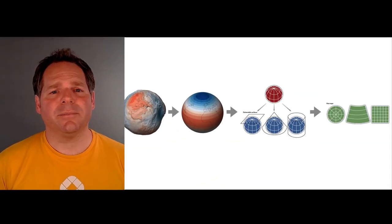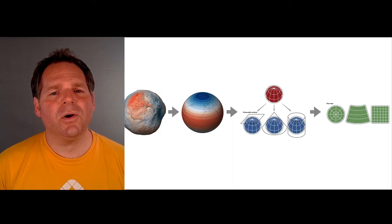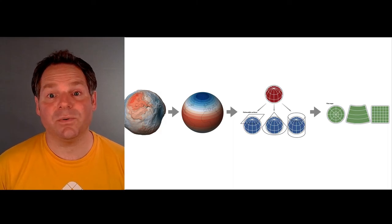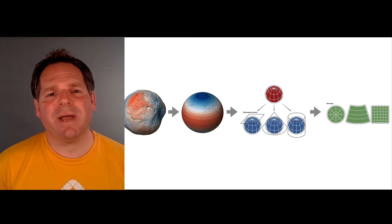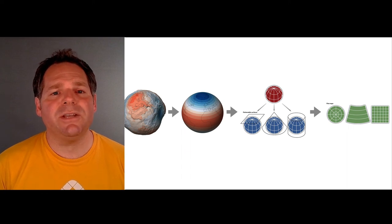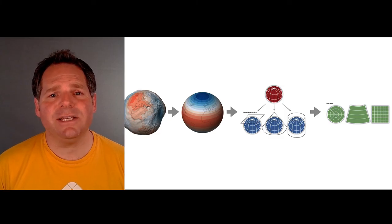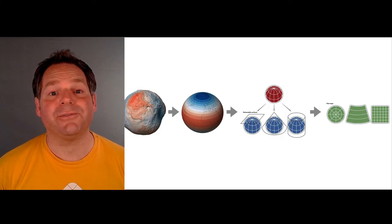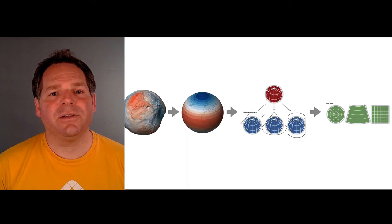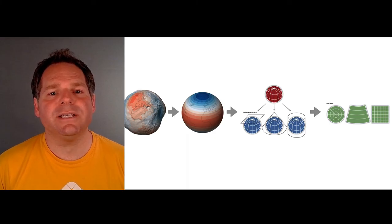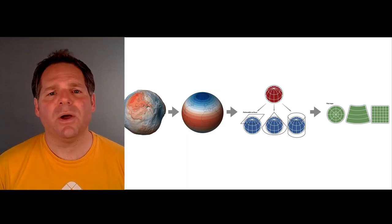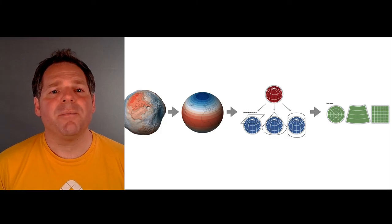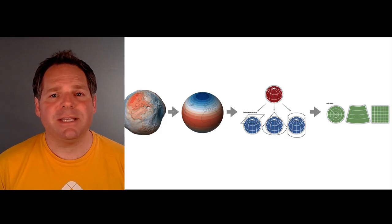To sum it up, Earth is an irregular, constantly changing object that we can't easily unroll into a map. Different map uses or different parts of the globe require different methods to create the ideal transformation from curved Earth to flat map. This is the reason why cartographers have created so many different projections, which we now identify by their EPSG codes.